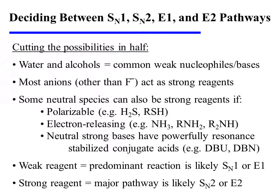There are also neutral strong bases that have powerfully resonance-stabilized conjugate acids. DBU and DBN would be two such examples of neutral strong bases. When a weak reagent is present, the predominant pathway is likely to be a first-order process, SN1 or E1. When a strong reagent is present, the major pathway is probably going to be a second-order process, SN2 or E2.